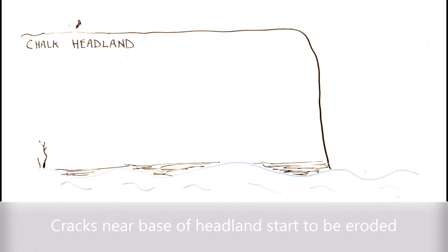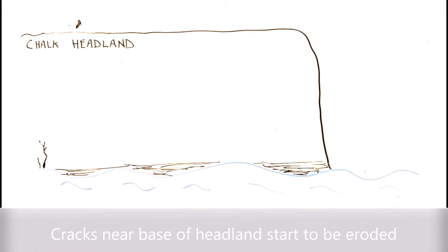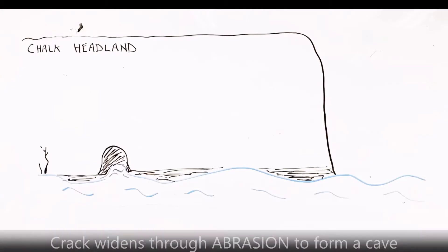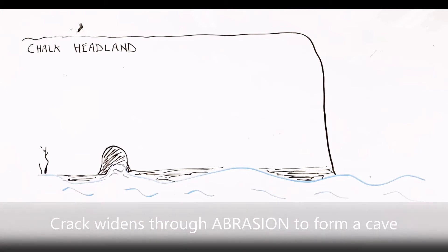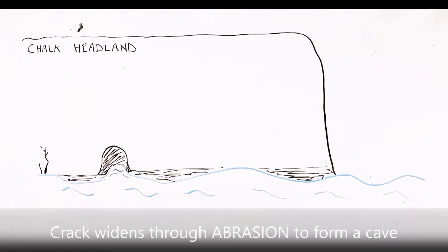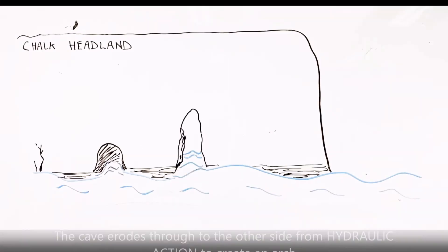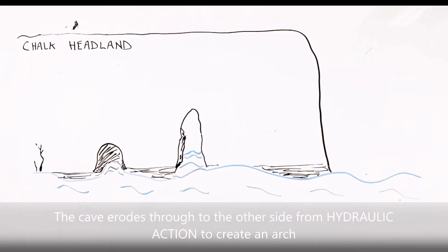Cracks near the base of the chalk headland by the wave-cut notch start to become eroded. Cracks at the base of the headland widen through abrasion to form a cave. The cave then becomes larger through hydraulic action until it breaks through and creates an arch.